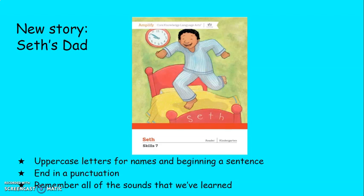We are going to read our new story that we read yesterday — Seth's Dad. We're going to read all about Seth's dad again. Now to review a little bit about sentences: remember, they all start with an uppercase letter, and the names of the characters start with an uppercase letter. Sentences end in punctuation, like a period. Remember all of the sounds that we've learned so far so we can blend words that don't look familiar to us.